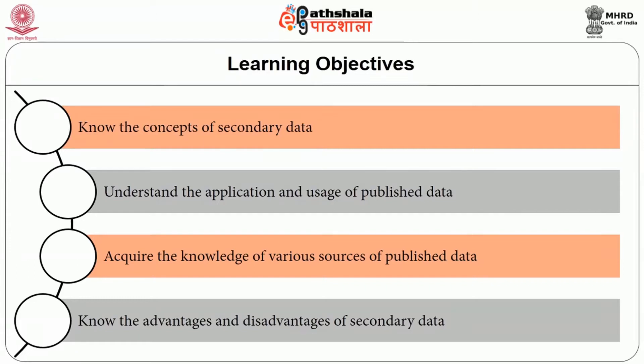This module will include the concept of secondary data, published and unpublished sources, evaluation and application of published data, advantages and disadvantages of secondary data, and published sources of secondary data collection. After completing this module, you will be able to know the concepts of secondary data, understand the application and usage of published data, acquire the knowledge of various sources of published data, and know the advantages and disadvantages of secondary data. This module is part of the course Research Methodology and Statistics for Home Science.